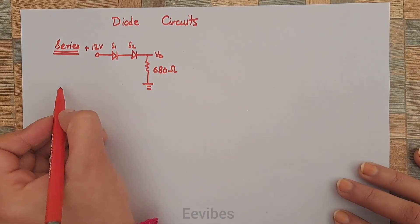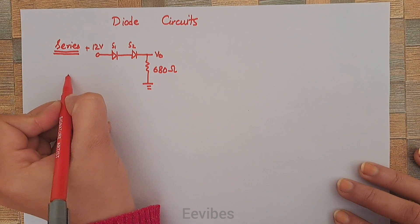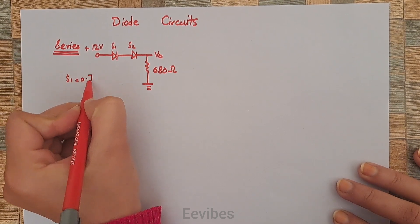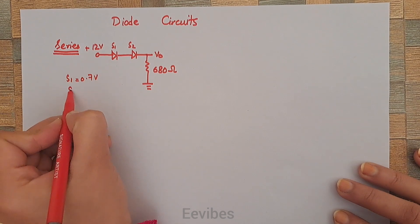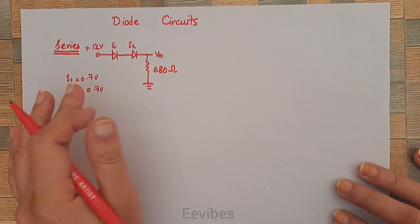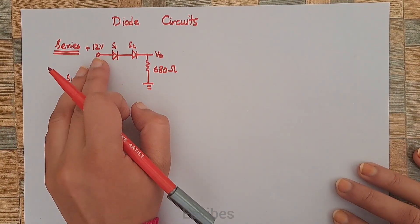The voltage drop across silicon diode 1 is equal to 0.7 volts, and silicon 2 is also equal to 0.7 volts, assuming both diodes have the same characteristics.